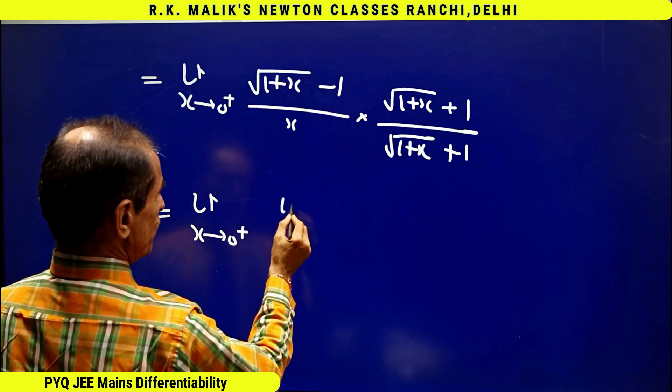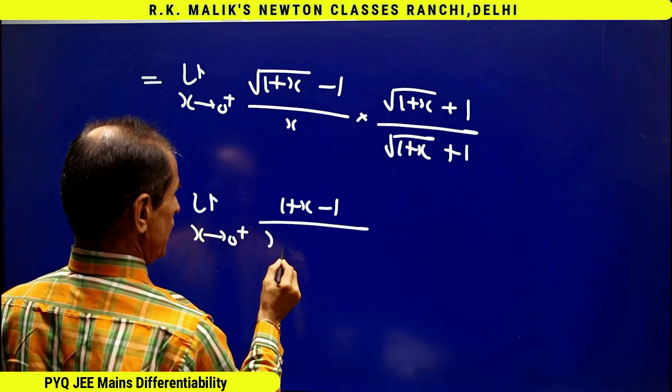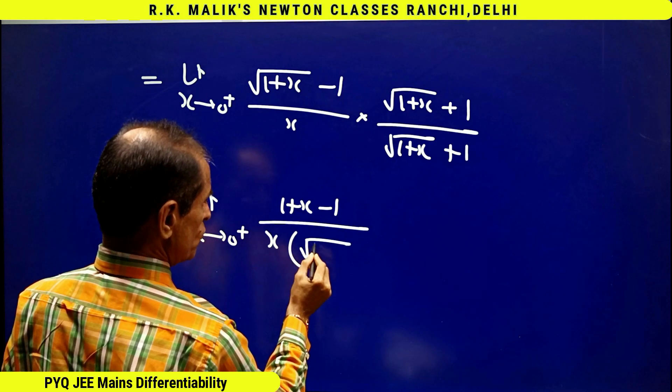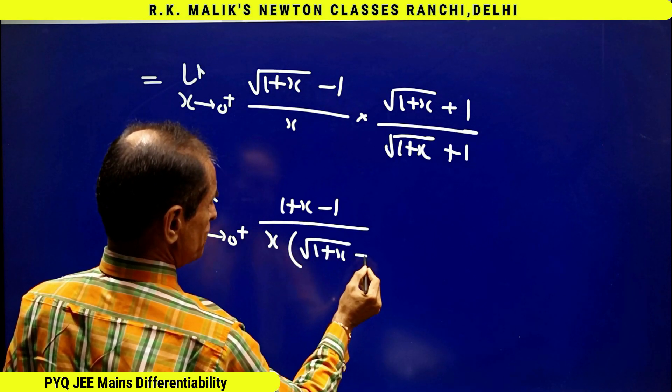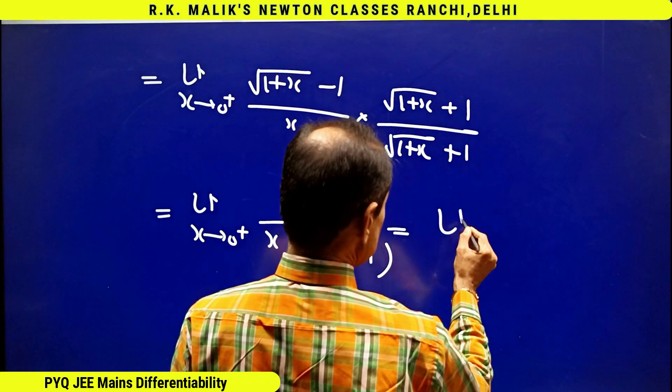(1+x) - 1 upon x times √(1+x) + 1. That is limit x tends to 0 plus.